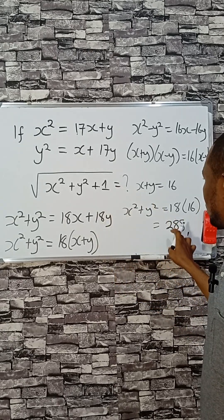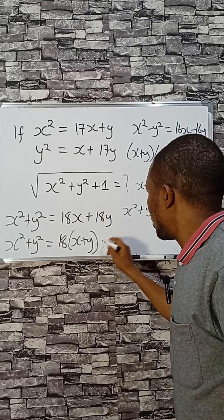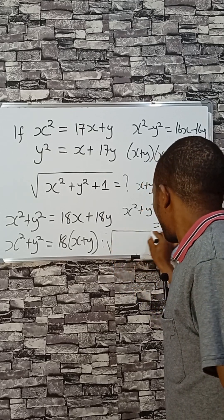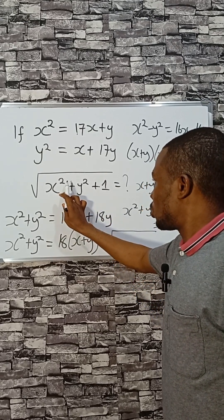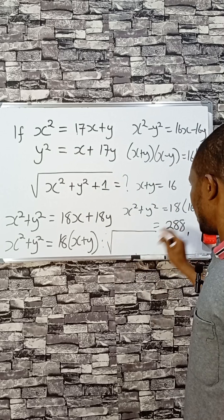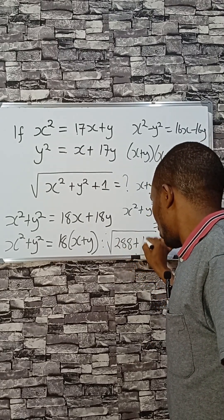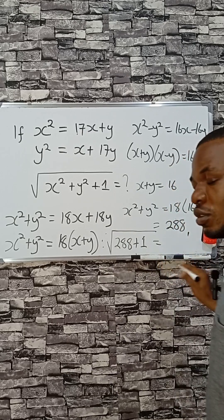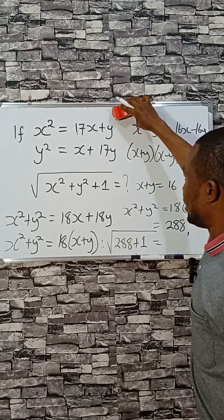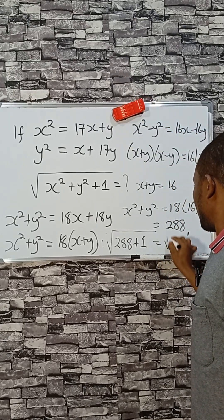We need to add 1 to this in the square root. So the square root of x² plus y² plus 1, which is 288 plus 1, will give us 289. The square root of 289...